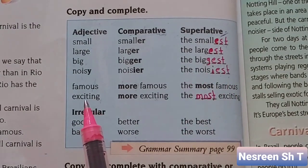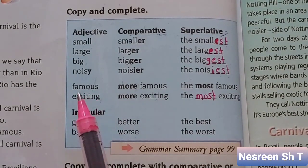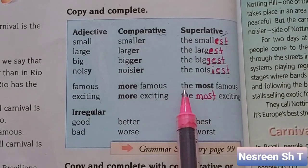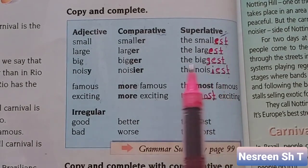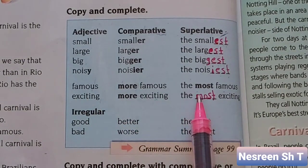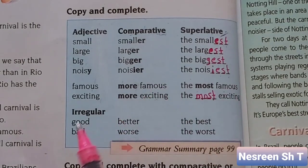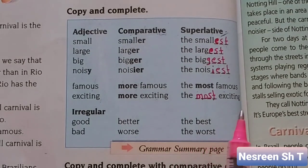When we have a long adjective, for example famous or exciting: famous becomes the most famous — we add the most plus the long adjective. Exciting becomes the most exciting. And don't forget the irregulars: good becomes the best, and bad becomes the worst. Now let's practice.